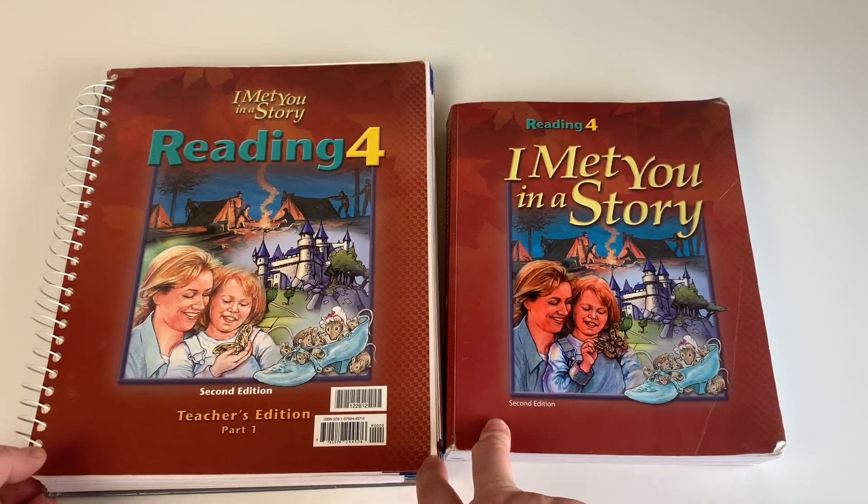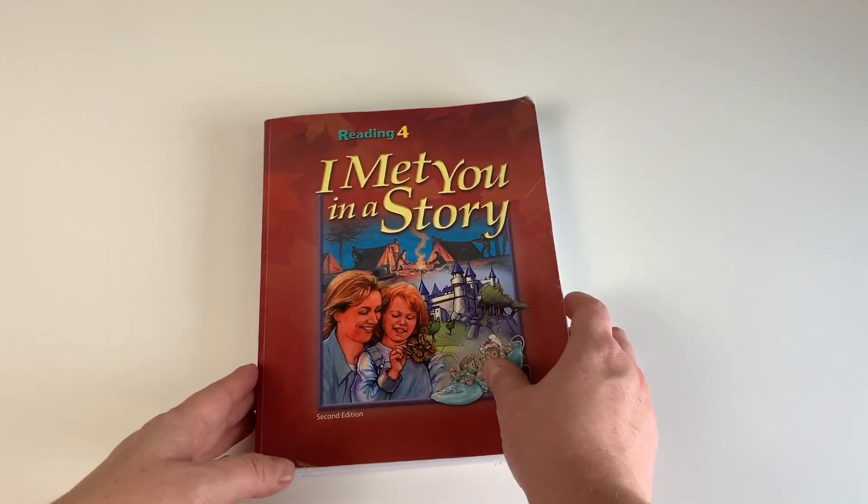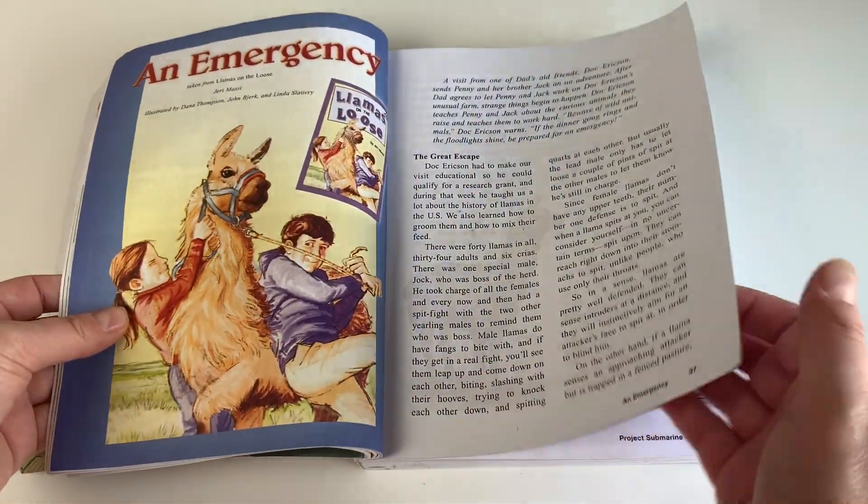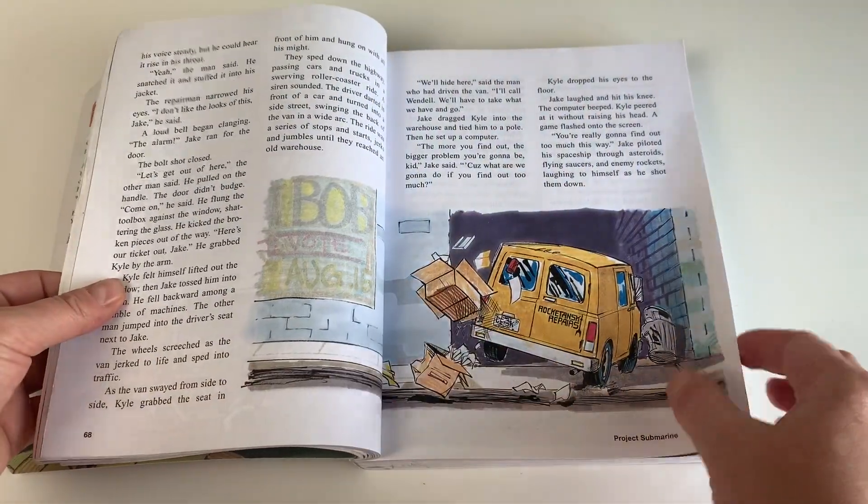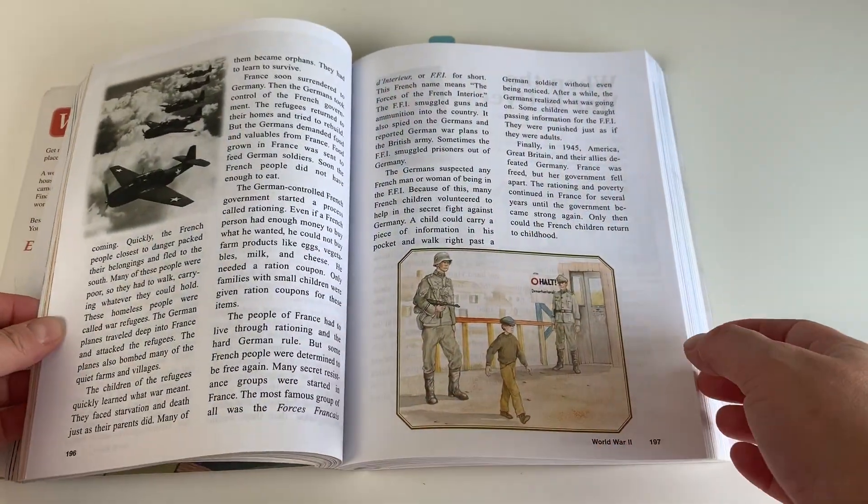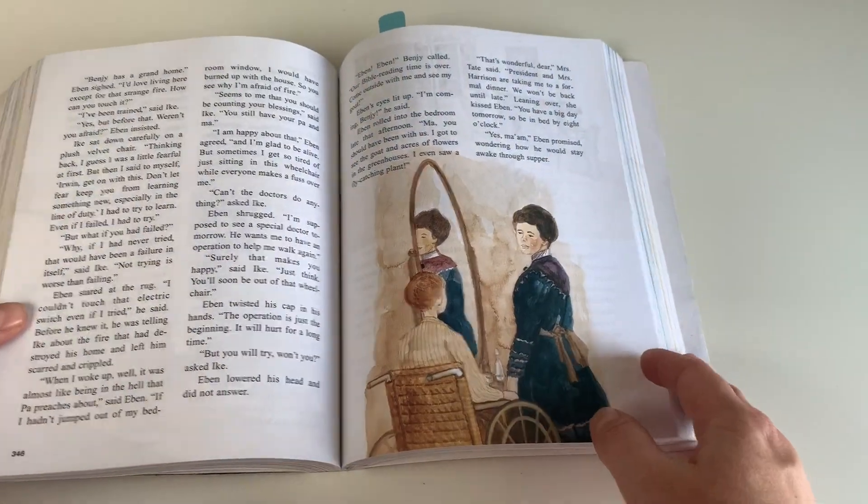For reading this year, she'll be using Reading 4 by BJU Press. My oldest two daughters have used this program for the past several years and we really like it. They seem to enjoy the stories they're reading and the variety of things they get to read about, and it also has a workbook where they do reading comprehension questions. So we really enjoy this reading program.